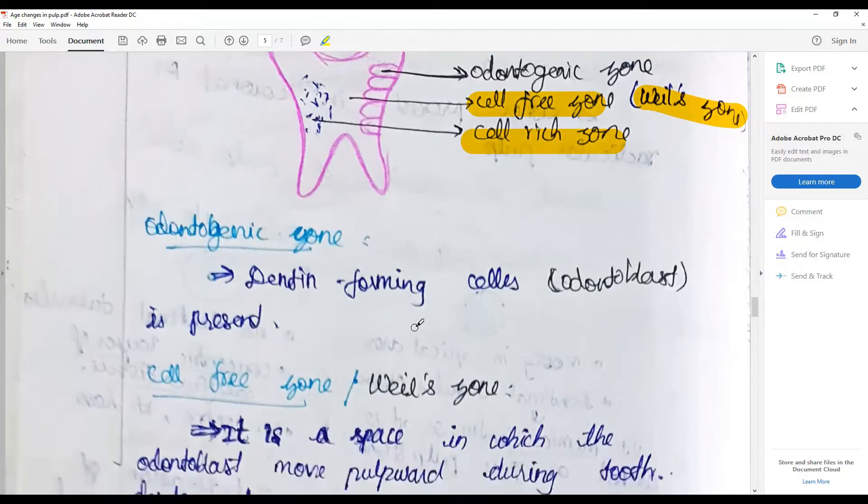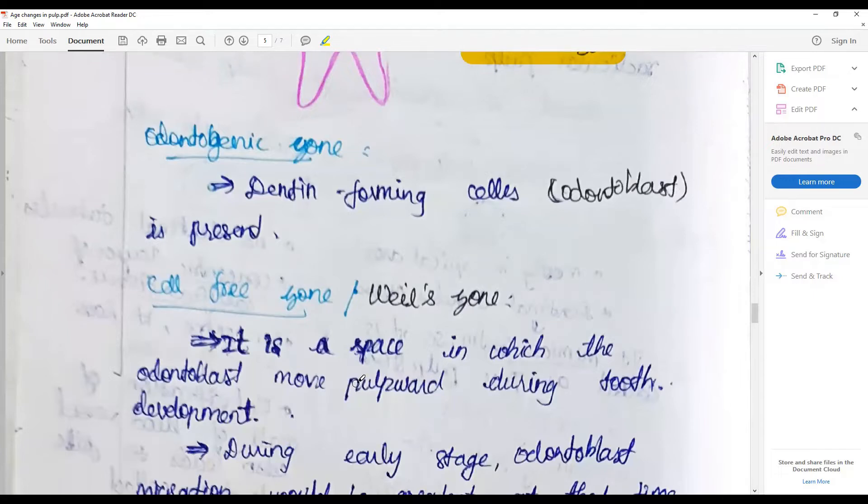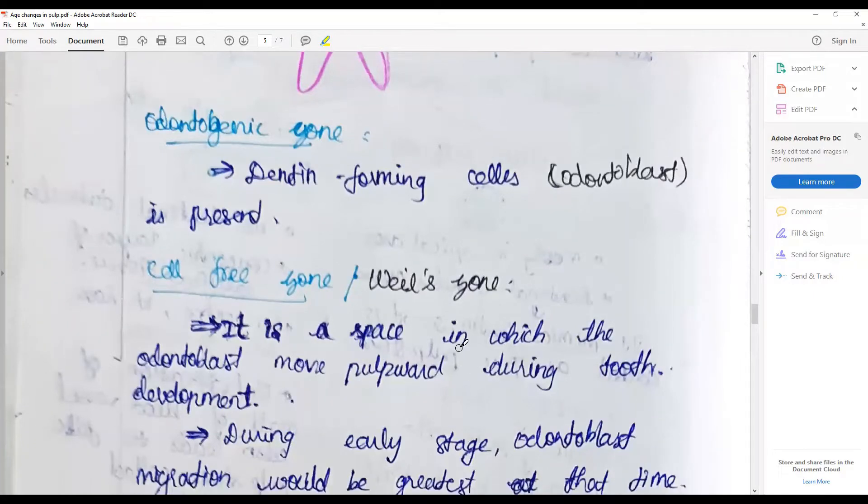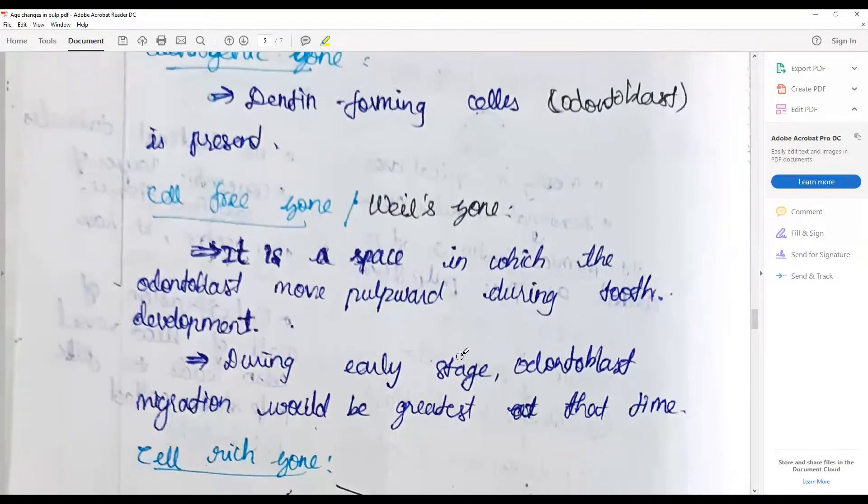The odontogenic zone contains the dentin-forming cells called the odontoblasts, and the Weil zone is a space in which odontoblasts move pulpward during tooth development and even with inflammation during the early stages of tooth development.